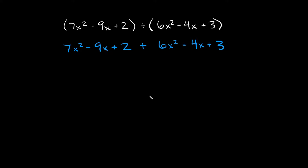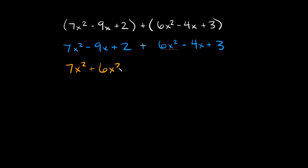The next thing you're going to do is shuffle your terms around so they're next to each other, because you want to combine like terms. So starting with 7x squared — what matches up with 7x squared out of all of this? It would be this positive 6x squared. So I'm going to bring that down: positive plus 6x squared.